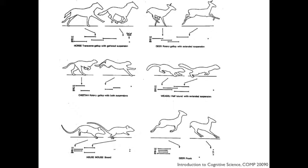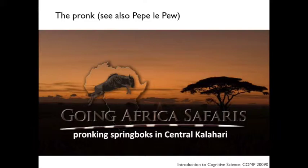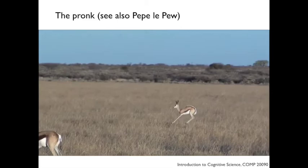Here are some of those individual gaits illustrated. At the top is the horse — Muybridge captured the galloping horse with four feet off the ground. Here is a different kind of gallop found in a deer, and another in a cheetah. Here's a gait called a half-bound found in a weasel. The house mouse has quite a different phase relationship — two front feet in phase with the back feet coming in at a different point. And here is a very unusual one: the pronk, in which all four feet do the same thing at the same time.